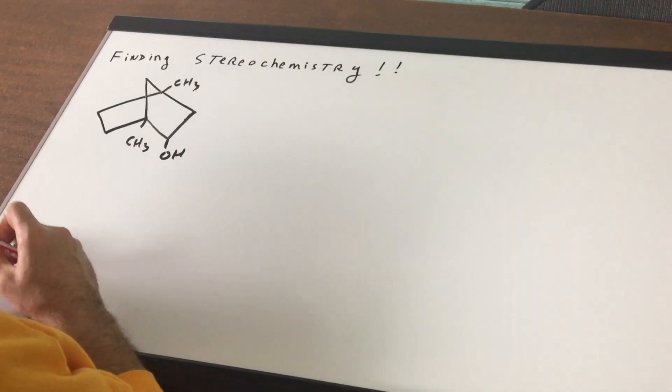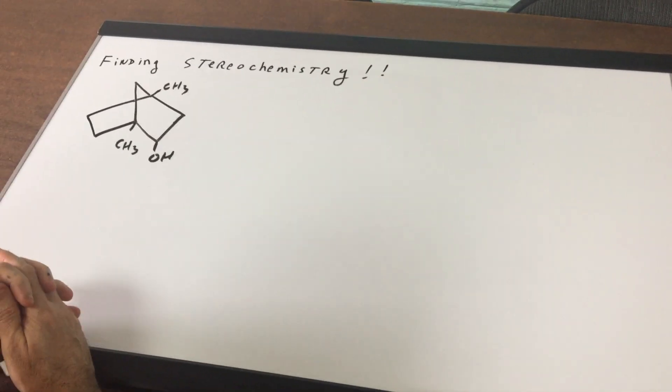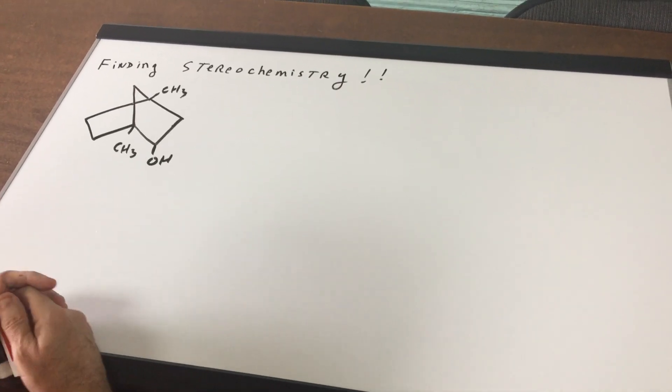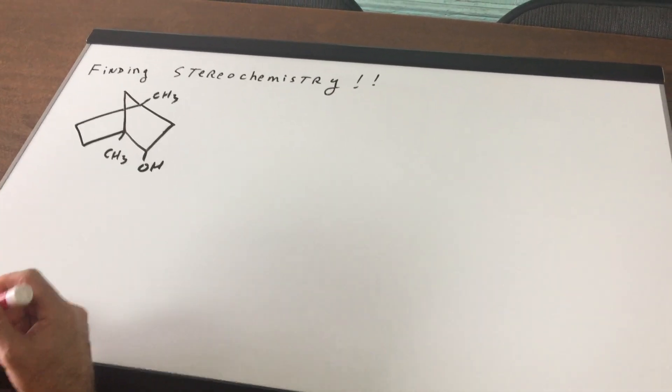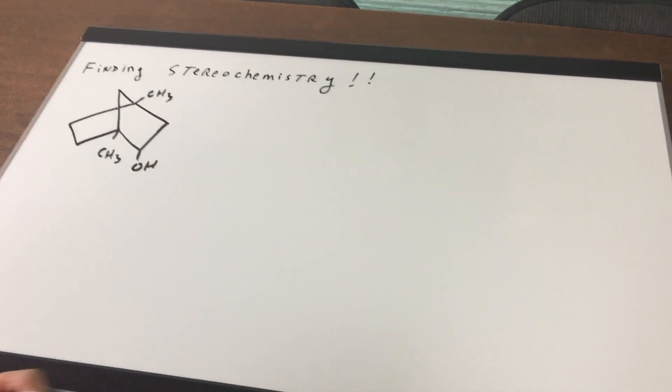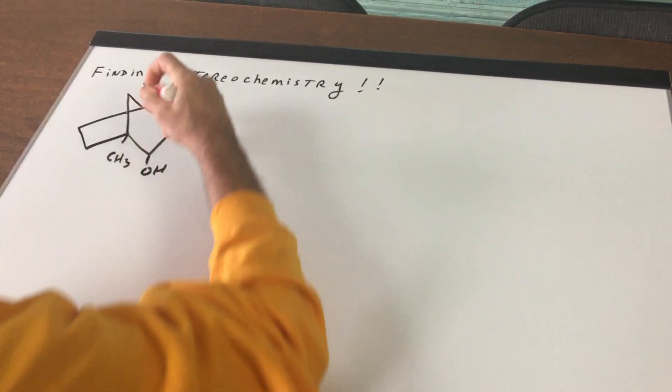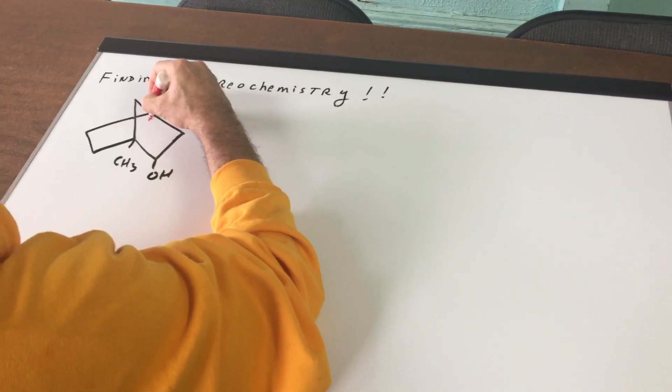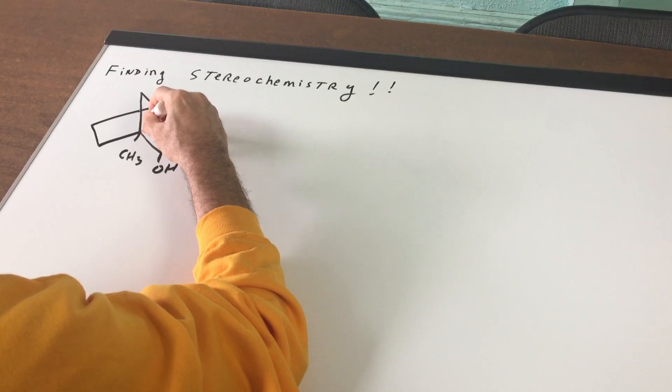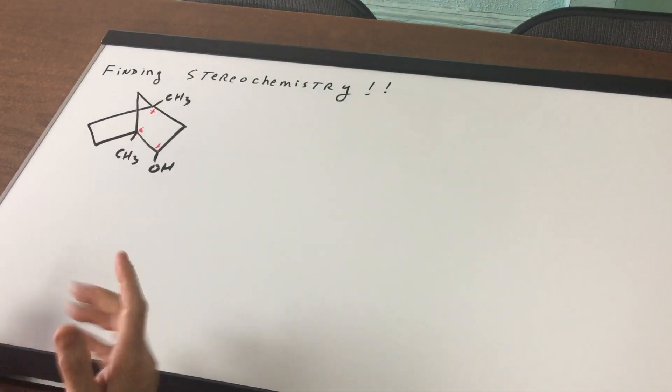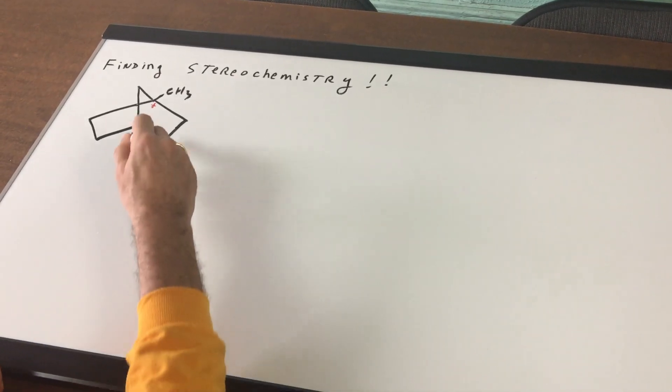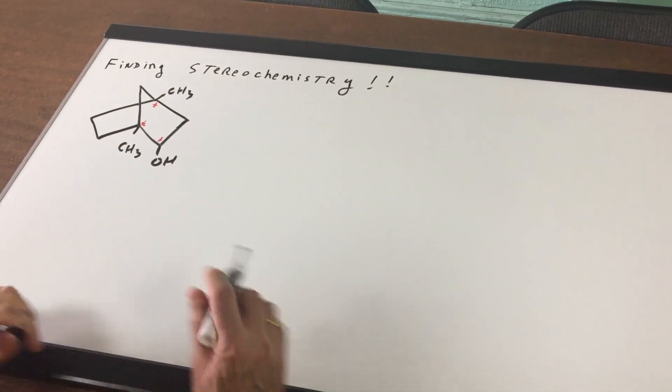The first thing we want to do here is find the stereochemistry. This is a hard problem, I'll give you that. For once, I'm agreeing with you, this is difficult. The first thing I want to do is put a little star on all the centers that are chiral. We have a chiral carb here, a chiral carb here, and a chiral carb here. So I hope you can see from the beginning that there are three chiral centers and each one would be R or S.